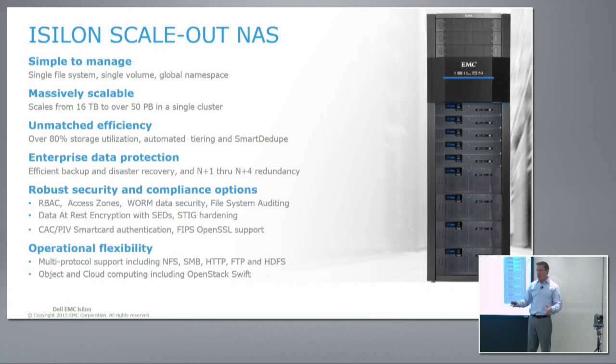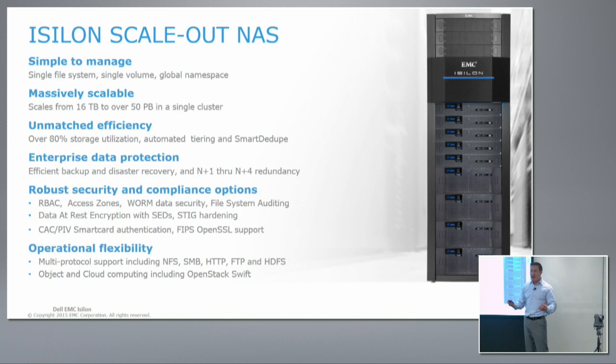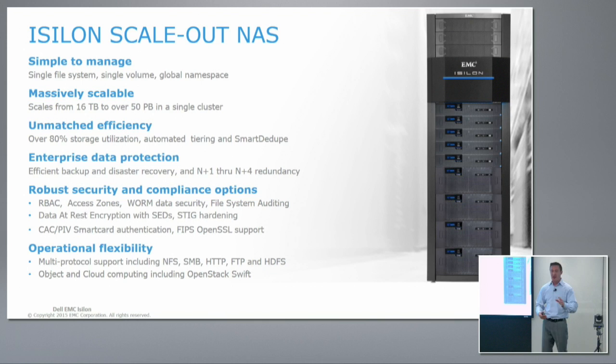From a data protection perspective, the way we protect data is erasure coding. As we stripe data across nodes, you can set the number of protection stripes you want, which equates to the number of simultaneous failures you can accept. We can go up to plus four in the current generation — meaning four drives or four nodes can fail simultaneously. We'll continue serving data and rebuild in the background to get you back to plus four so we can accommodate another failure.